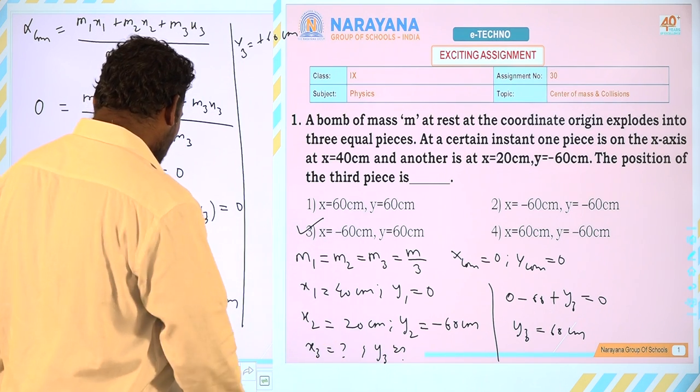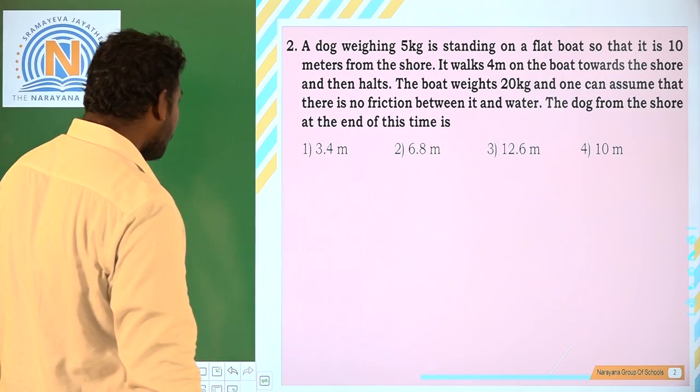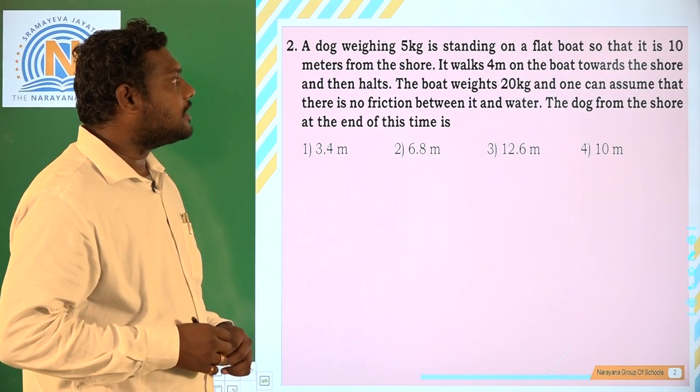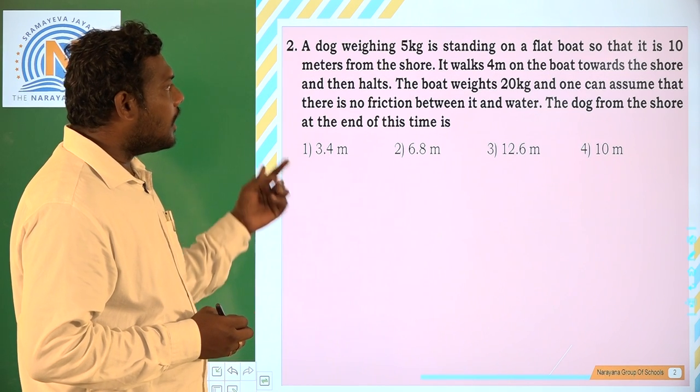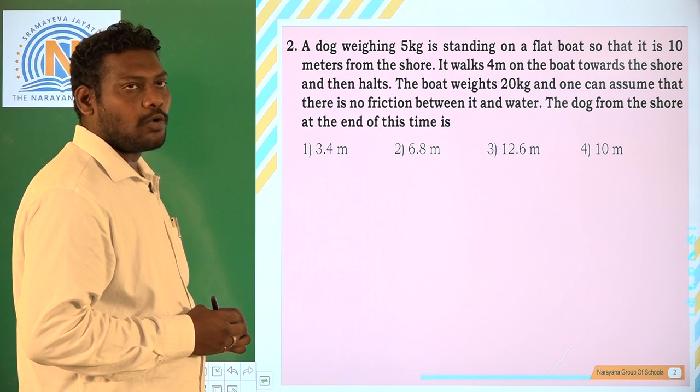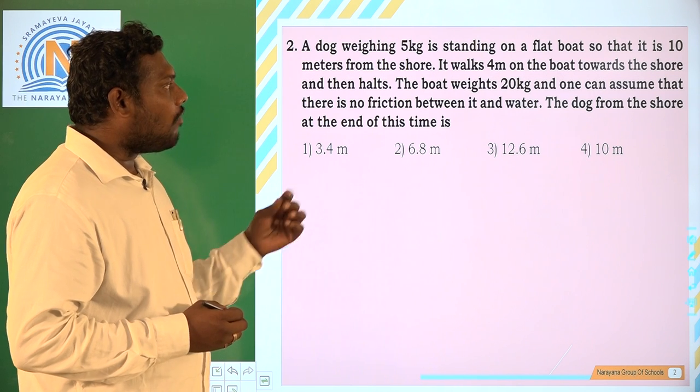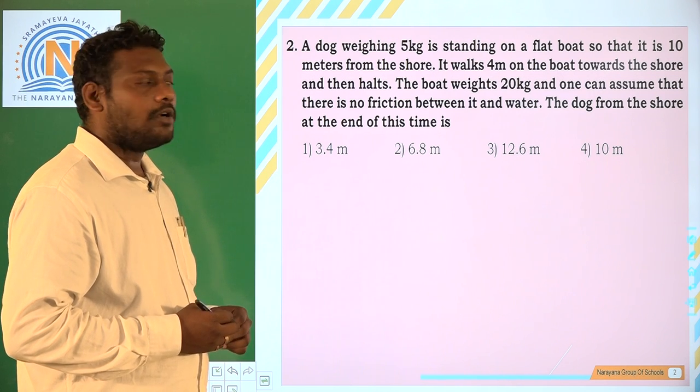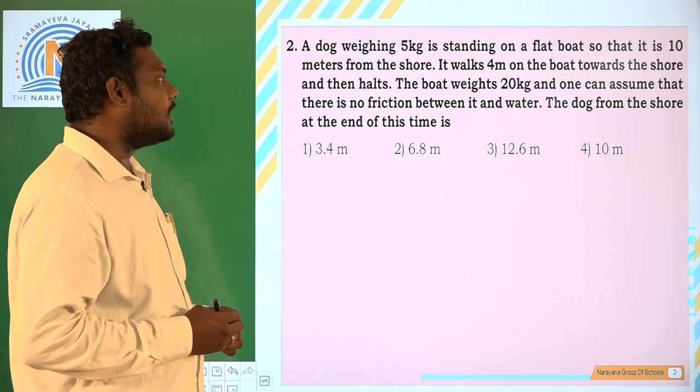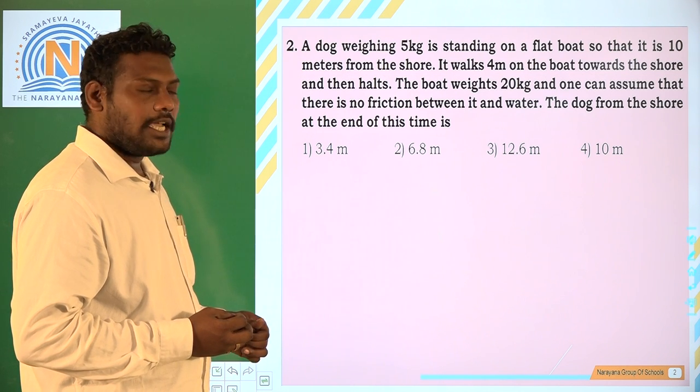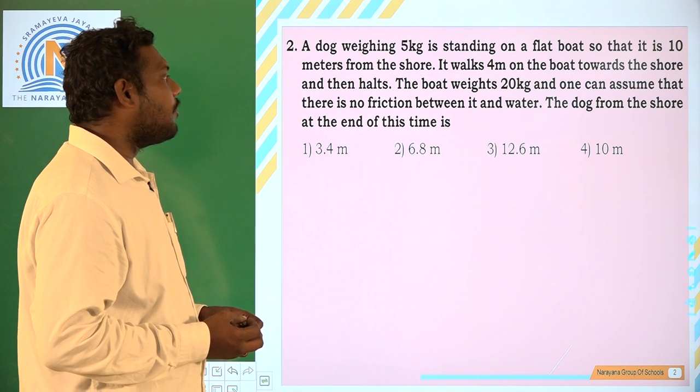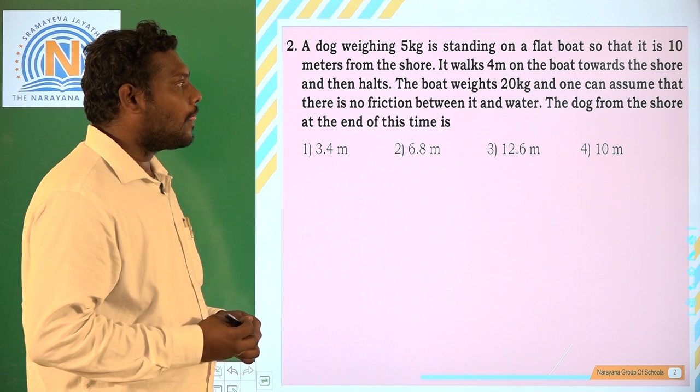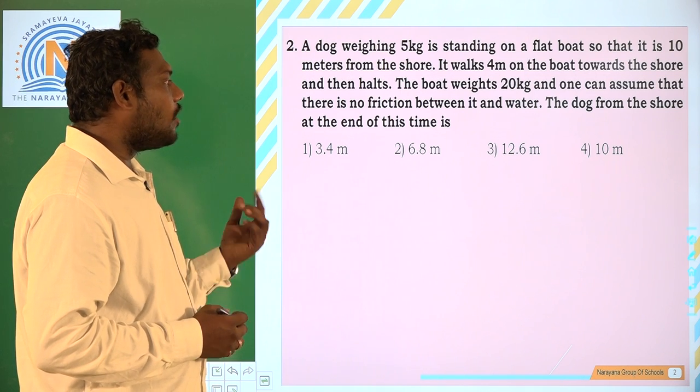Now let us come to the second question here. A dog weighing 5 kg is standing on a flat boat so that it is 10 meters from the shore. It walks 4 meters on the boat towards the shore and then halts.